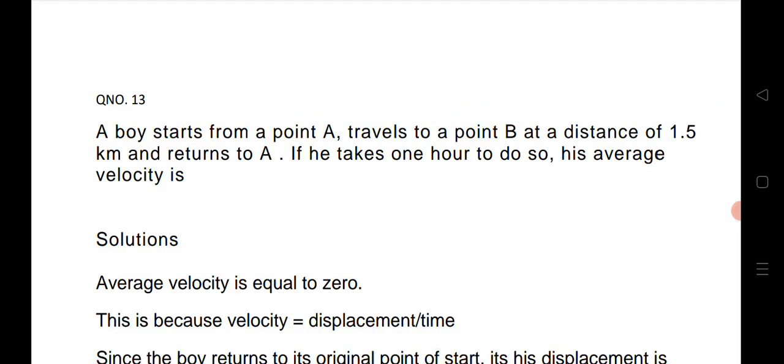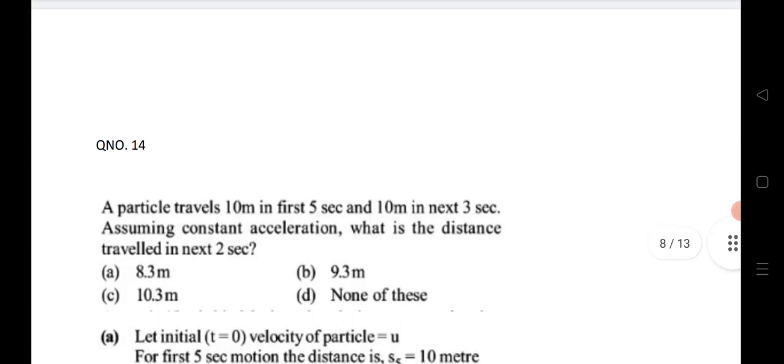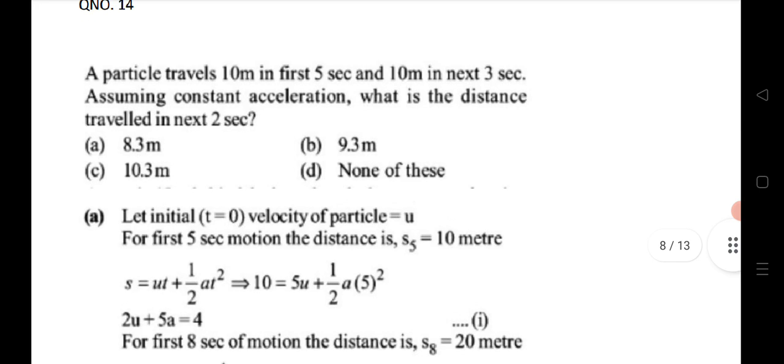Thirteenth question: a man travels from point A to point B, a distance of 1.5 km, and returns to A. Remember: when a body returns to its initial position, the total displacement is zero, so the average velocity becomes zero.